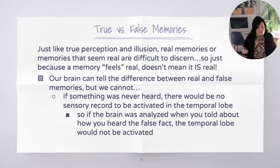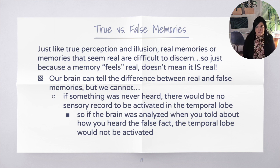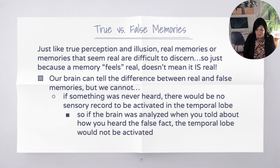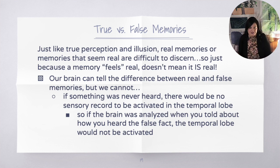True versus false memories: just like true perception and illusion, real memories and memories that seem real are very difficult to discern from each other. Just because a memory feels real doesn't mean it is real. However, our brain can actually tell the difference between real and false memories. A false memory in the temporal auditory cortex would have no sensory record to activate in the auditory cortex and temporal lobe — that part of the brain wouldn't be stimulated when you recall a false memory.